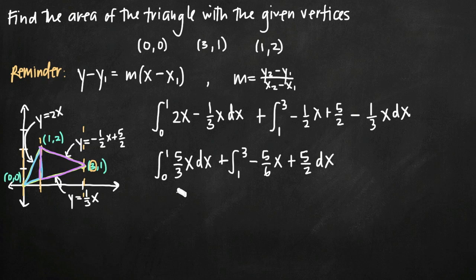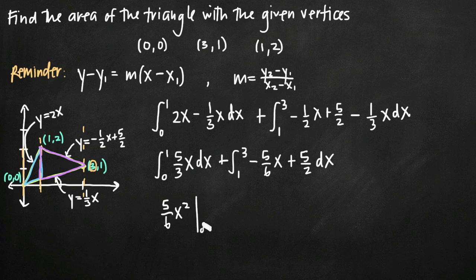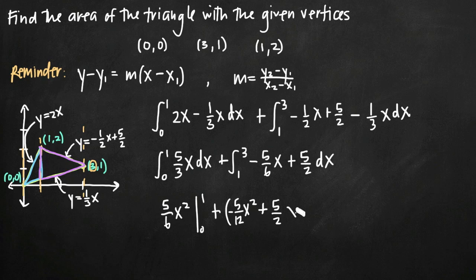We evaluate the integrals using the power rule — add 1 to the exponent and divide by the new exponent. For the first integral, (5/3)x becomes (5/6)x², evaluated from 0 to 1. For the second integral, −(5/6)x becomes −(5/12)x², and 5/2 becomes (5/2)x, evaluated from 1 to 3.